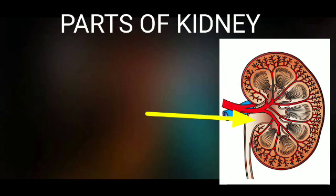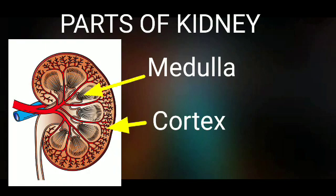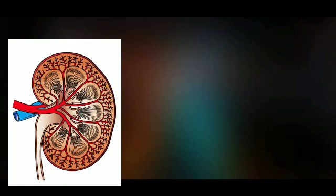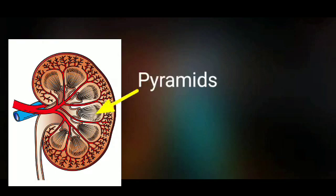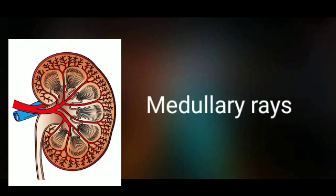The kidney shows an outer part called the cortex, and inner to the cortex there is the medulla. The medulla consists of triangular areas called renal pyramids. Each pyramid shows a base and an apex — the base is directed towards the cortex and the apex towards the renal pelvis. Thin projections from the base of the pyramids towards the cortex are called medullary rays.